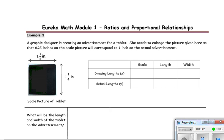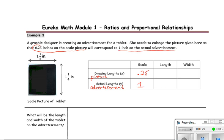Example 3: a graphic designer is creating an advertisement for a tablet. She needs to enlarge the picture given here so that 0.25 inches on the scale picture corresponds to 1 inch on the actual advertisement. What will the length and width of the tablet be on the advertisement? The length on the scale drawing is 1 and 1/4 inches and the width is 1 and 1/8 inches.